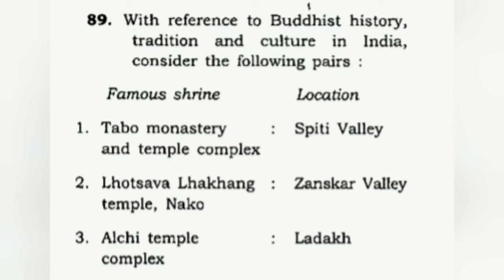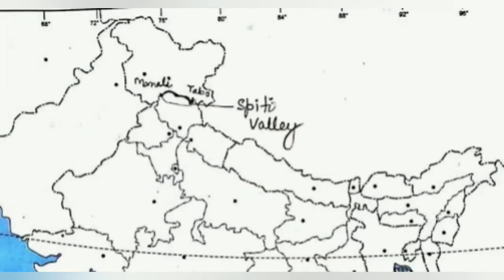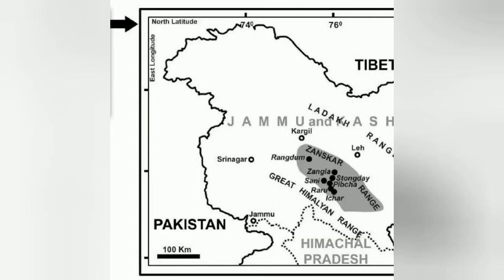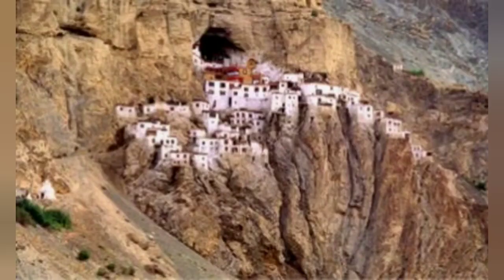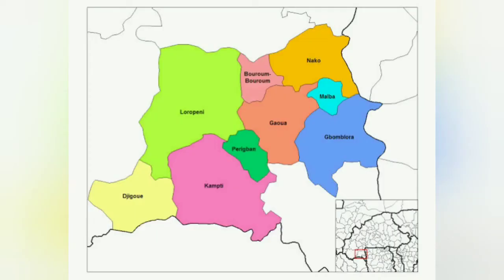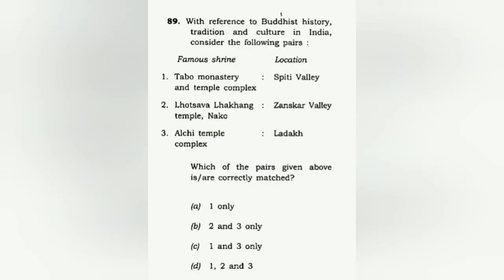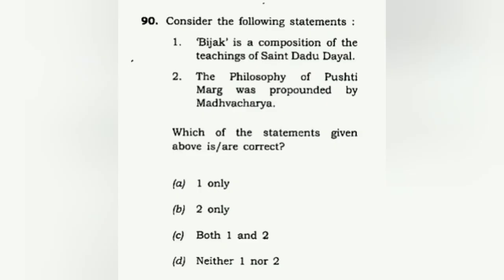With reference to Buddhist history, tradition, and culture in India, consider the following pairs of monastery or temple complexes and their valleys. Buddhist and Jain history in the Indian history syllabus is important. Taboo monastery and temple complex is in Spiti Valley — that is correct. Zanskar Valley is in Jammu and Kashmir; the Lhatsavath temple they say is in Nakko, but Nakko is in Himachal Pradesh, not Jammu and Kashmir — so the second option is incorrect. The third option, the temple complex in Ladakh, is correct. The answer is C: one and three only.